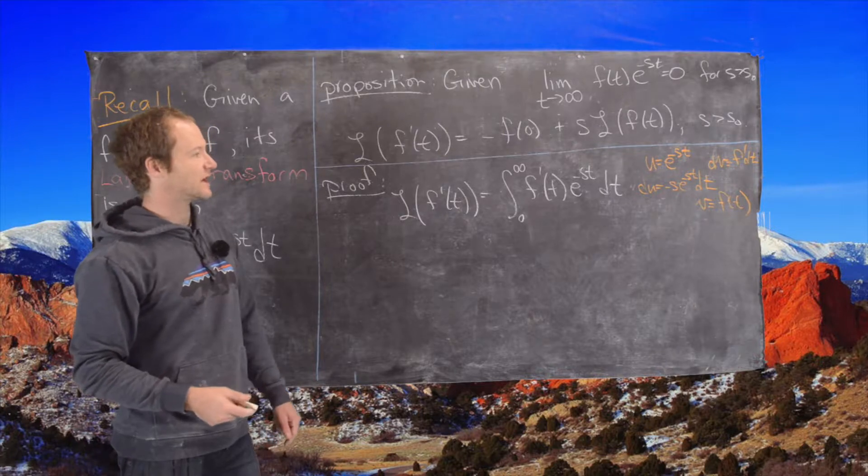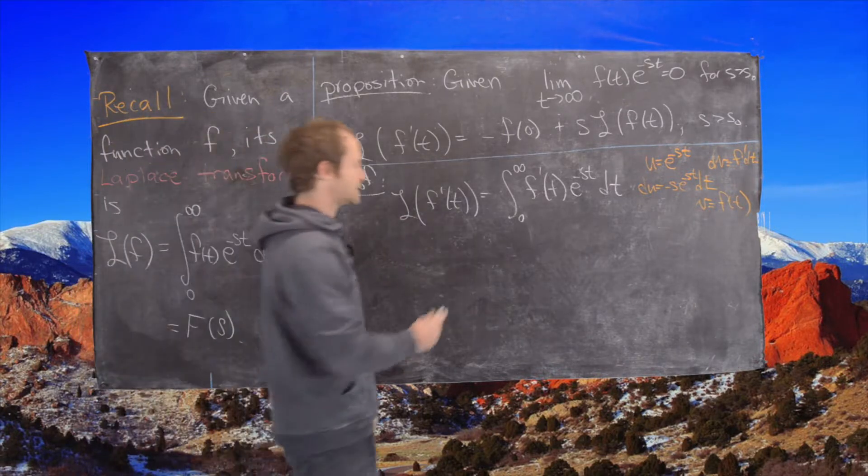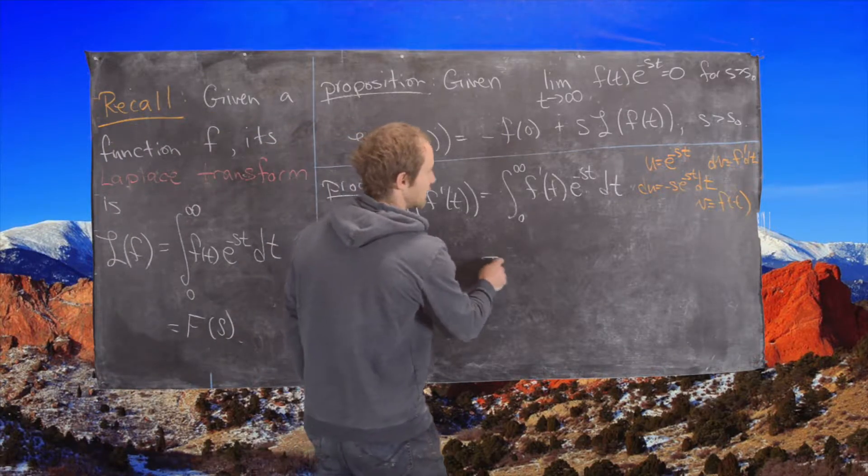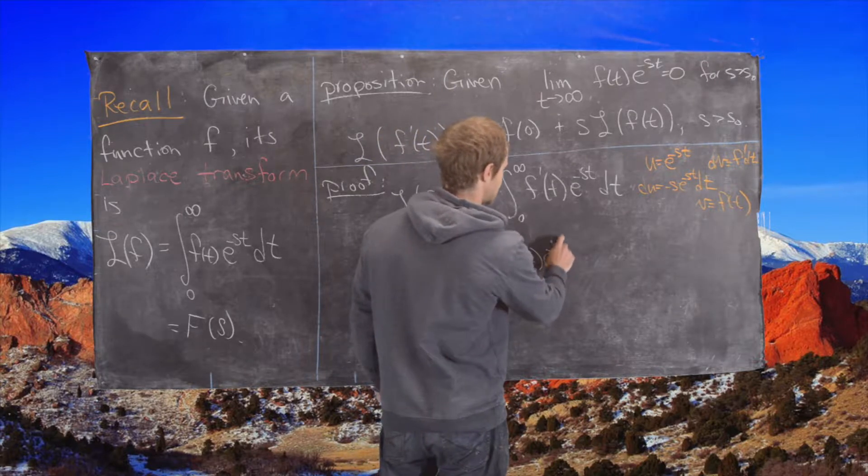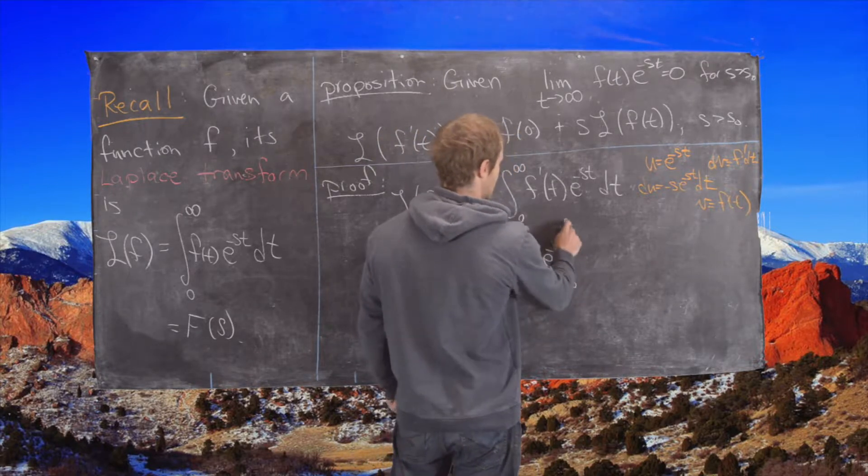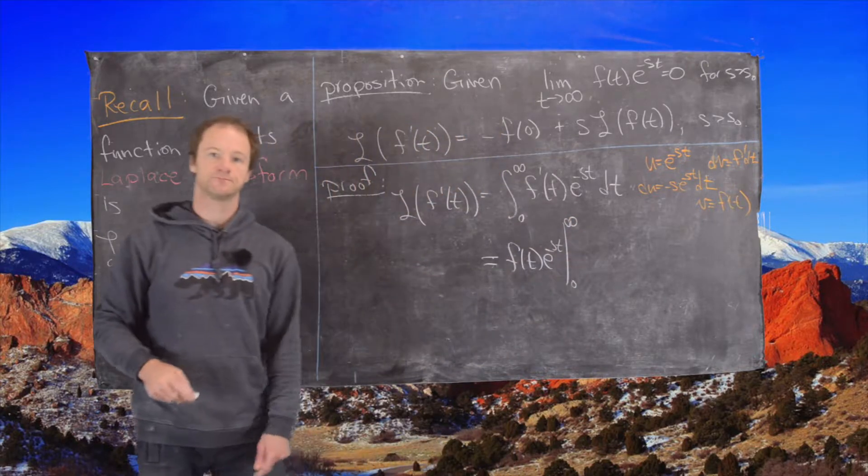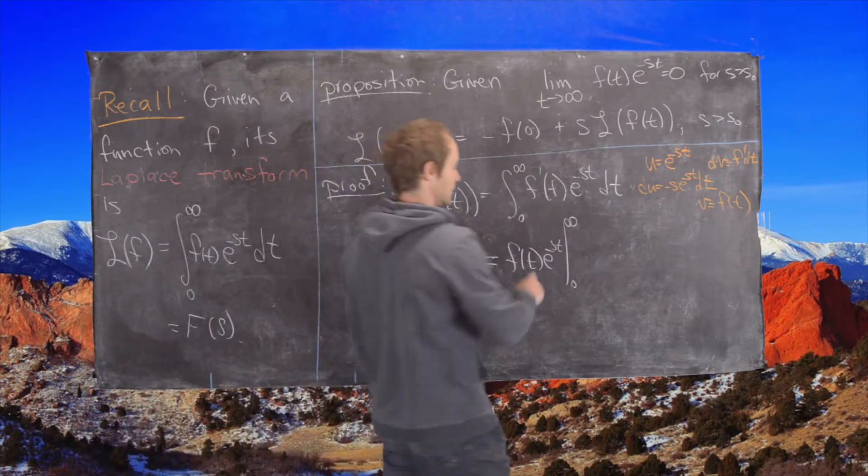So now when we plug this into our integration by parts formula, notice what we get: we get u times v, so that's going to be equal to f(t)e^(-st), and now we're evaluating that from 0 to infinity.